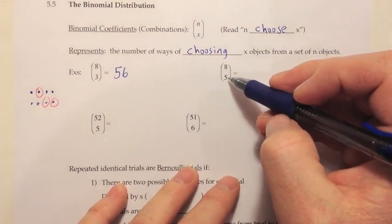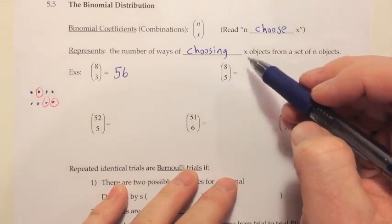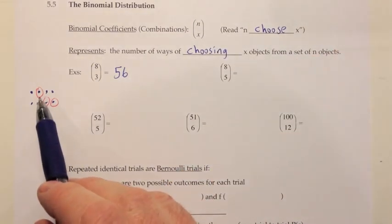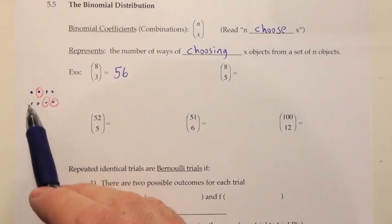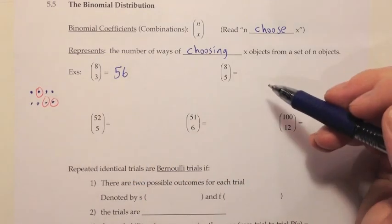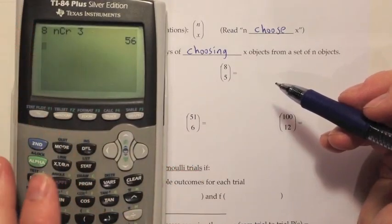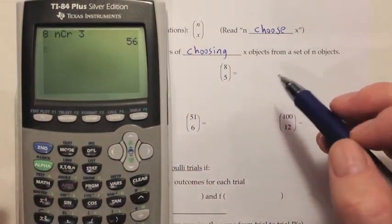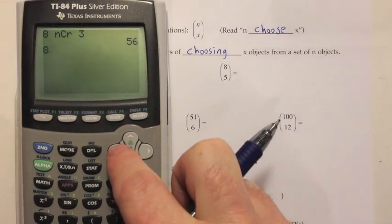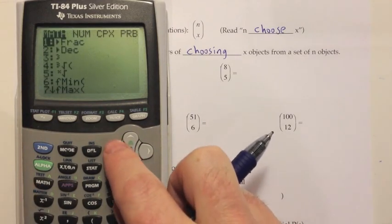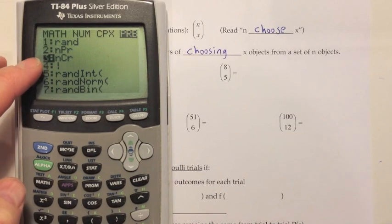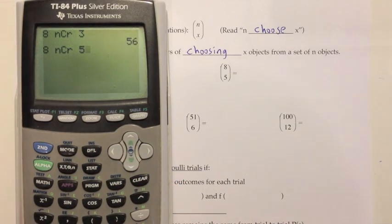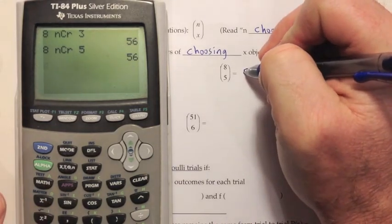If I do 8 choose 5, that should be the same answer because when you choose 3 to circle there's a sense in which you also chose 5 to leave uncircled. Let's go ahead and verify that on the calculator: 8, then math, then probability menu, then down to number 3 which is choose, then put the 5, and I expect to get that same answer of 56. And that's what happened.